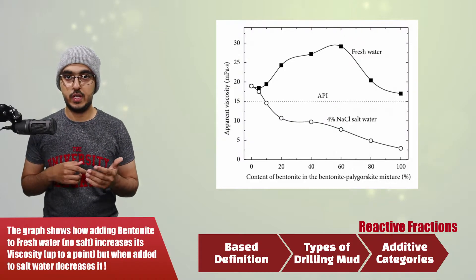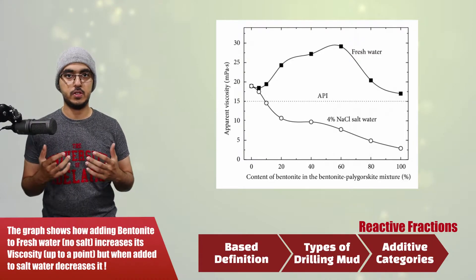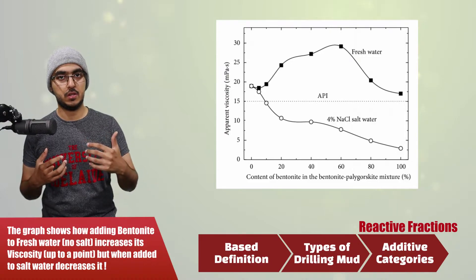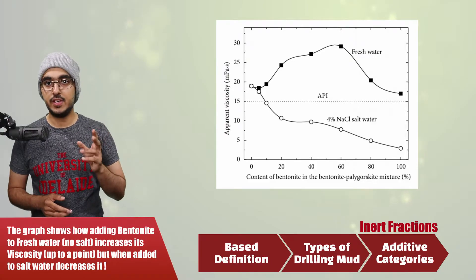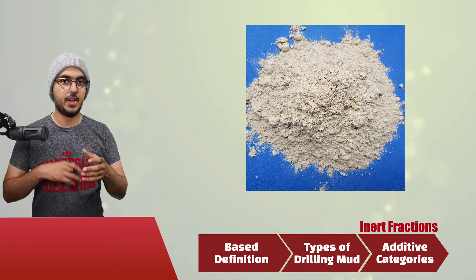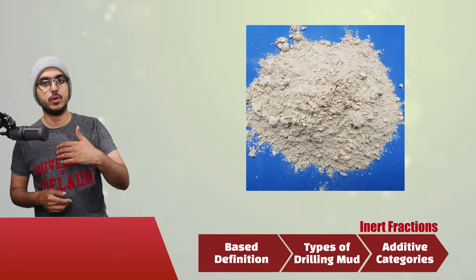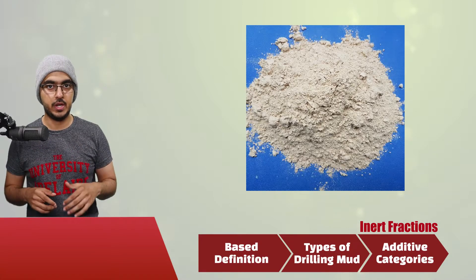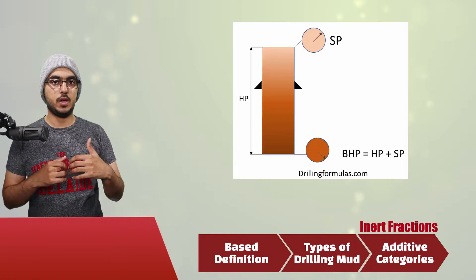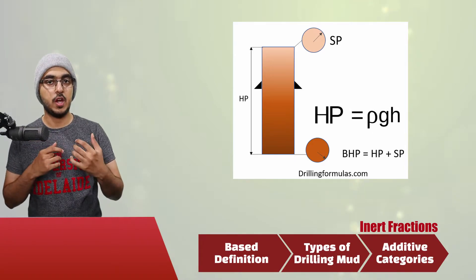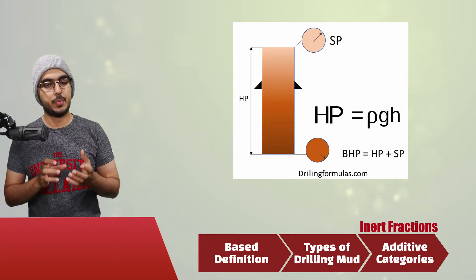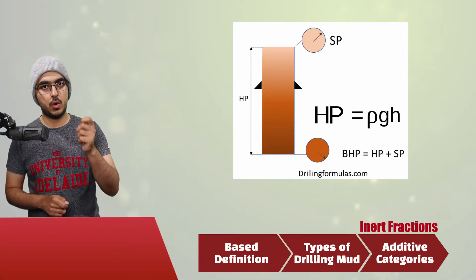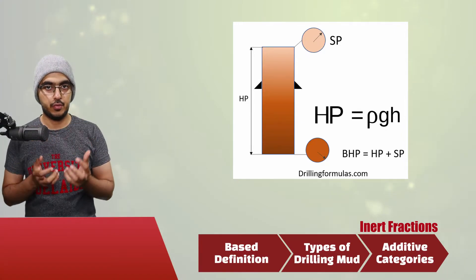Different reactive fractions are used in different salinity muds because the interaction between the additive and the mud at that certain salinity differs. Second is the inert fraction, which increases the density of the mud — increasing density means you are increasing the overall wellbore pressure, since the hydrostatic pressure of the mud is rho times G times H. Rho is the density, so increasing rho increases the overall pressure.